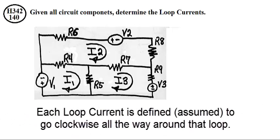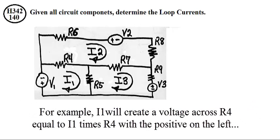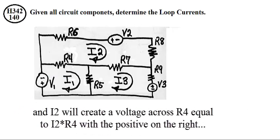Each loop current is defined or assumed to go clockwise all the way around that loop. For example, I1 will create a voltage across R4 equal to I1 times R4 with a positive on the left. I2 will create a voltage across R4 equal to I2 times R4 with the positive on the right.